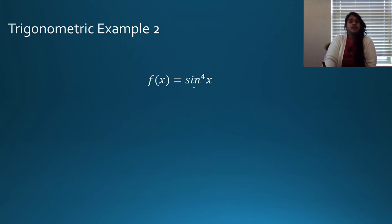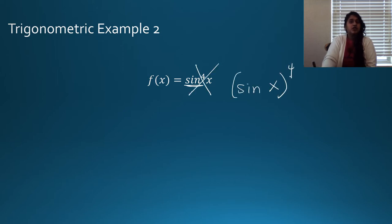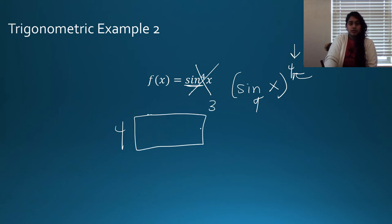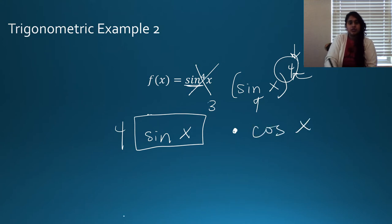For sine to the fourth of X — rewritten as sine of X, all to the fourth power — the outside is the fourth power and the inside is sine of X. Derivative of the outside: bring the 4 down, subtract 1 to get cubed. Leave the inside alone. Multiply by the derivative of the inside, which is cosine X. So the derivative is 4 sine cubed of X times cosine X.